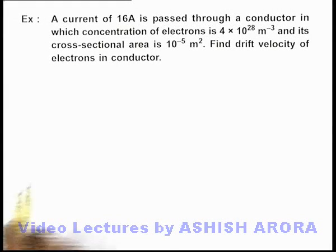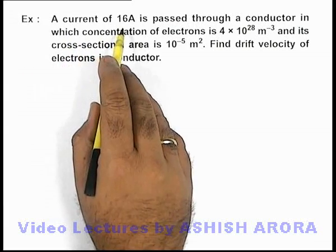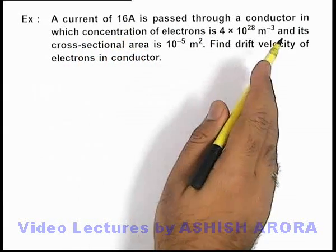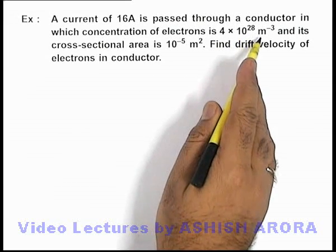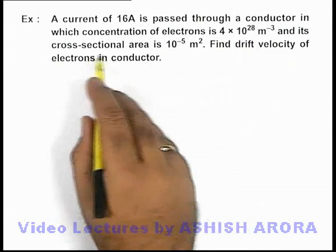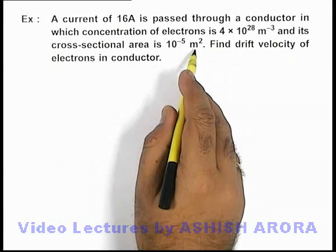In this example, we are given that a current of 16 ampere is passed through a conductor in which concentration of electrons is 4 into 10 to power 28 per meter cube, and its cross sectional area is 10 to power minus 5 meter square.